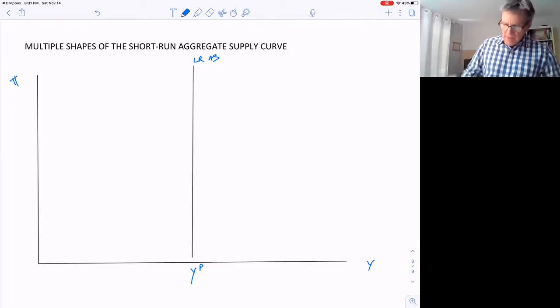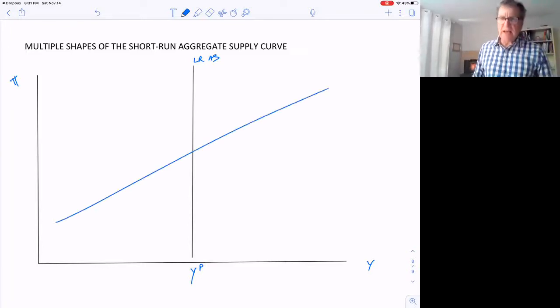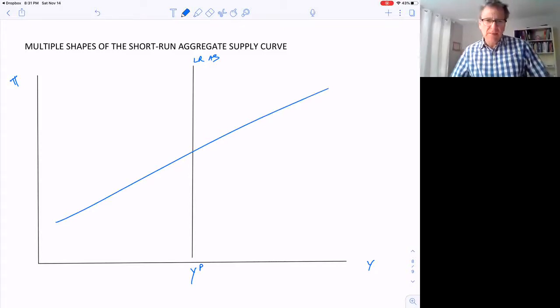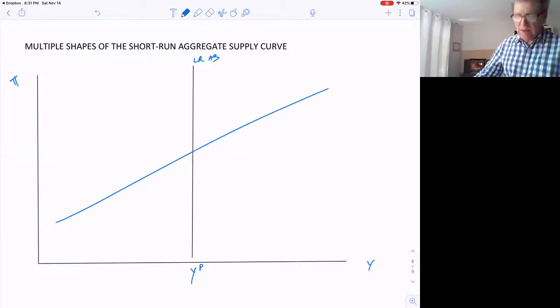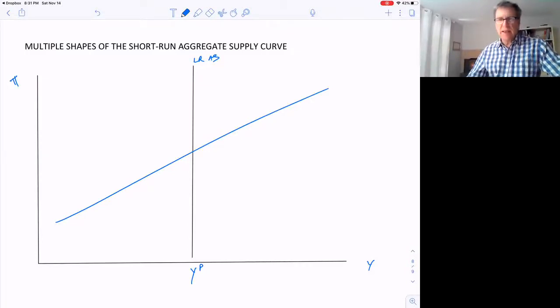But we've drawn this as just a straight line for convenience. But in all practicality, it may be very difficult to go too much past potential output. We might be able to go out past it a little bit for a short period of time, but it's not sustainable. We could increase GDP real quickly, double GDP by having everyone work 80 hours a week instead of 40 hours a week, but it's not sustainable.